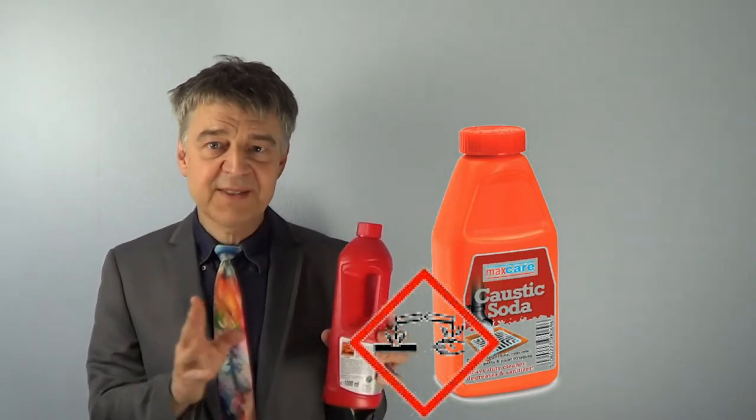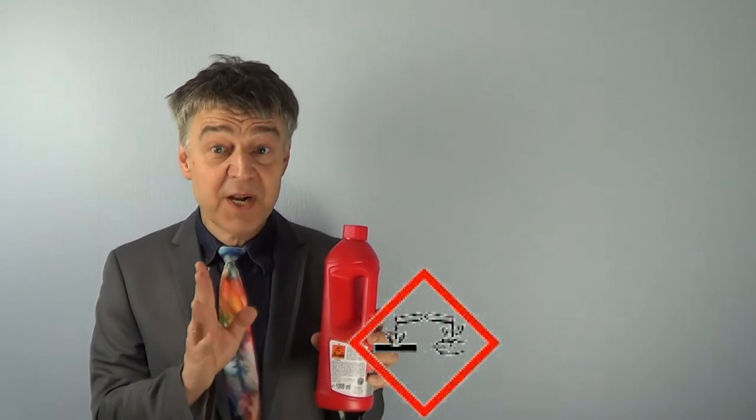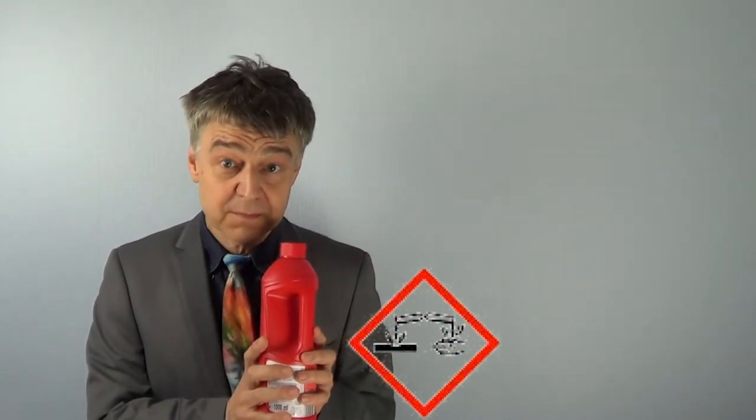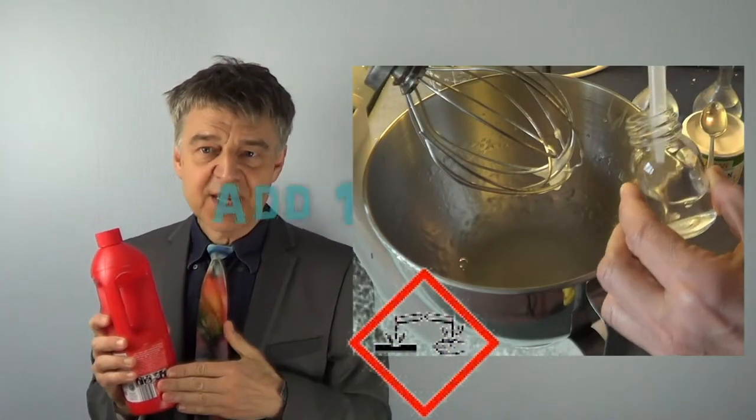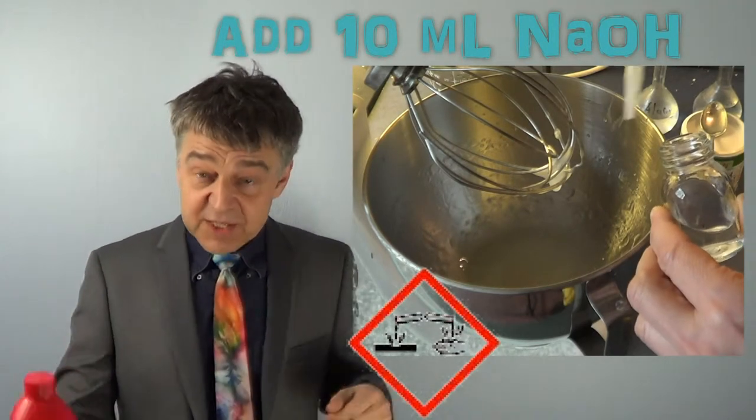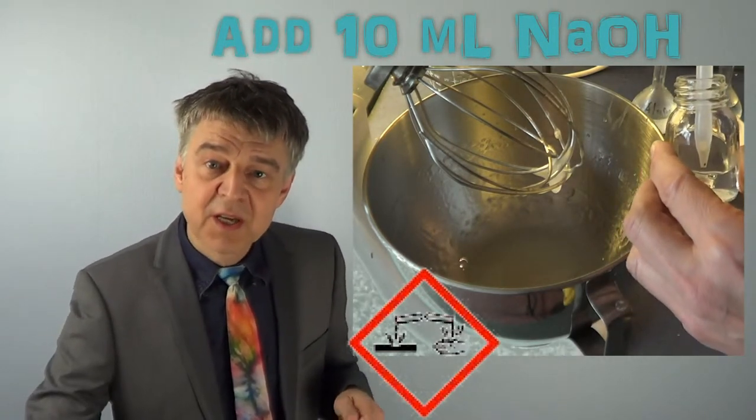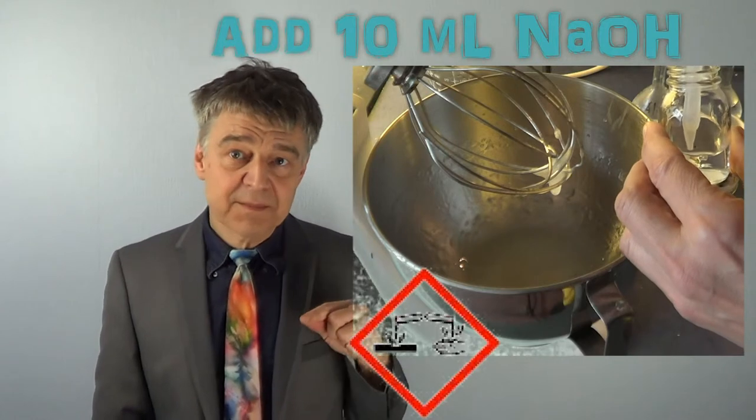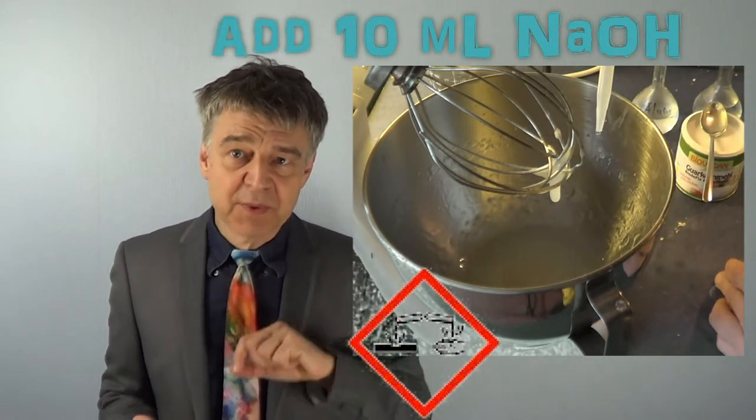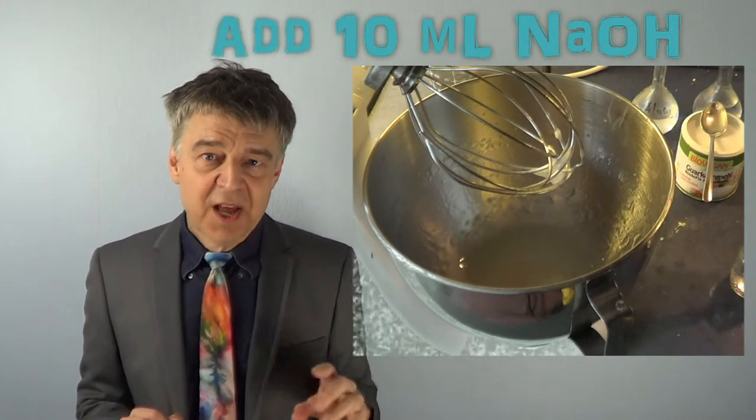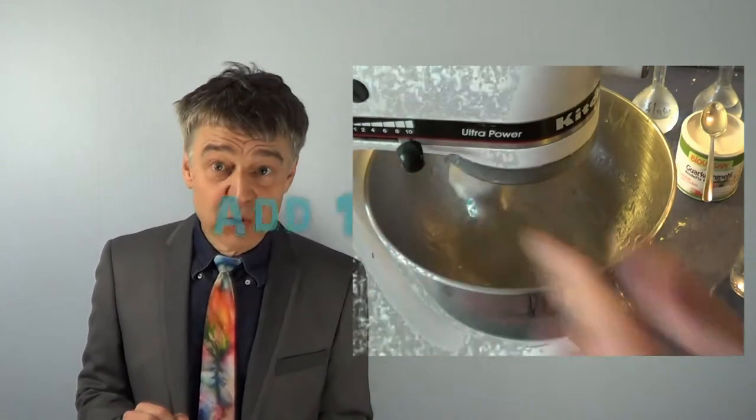Caution! Before handling such a substance, become familiar with the security instructions. I will give 10 ml of this lye into the galacto-solution to make it less acidic. Now the teeth of our galactomannan are sharp and we can offer the aluminum.